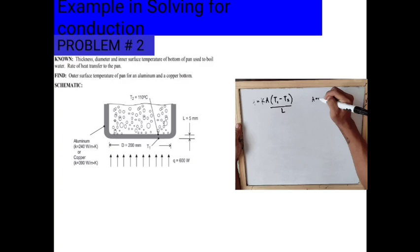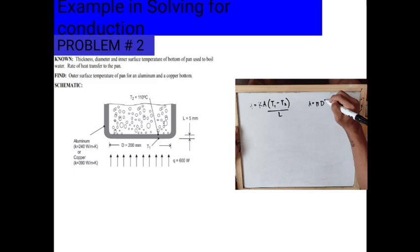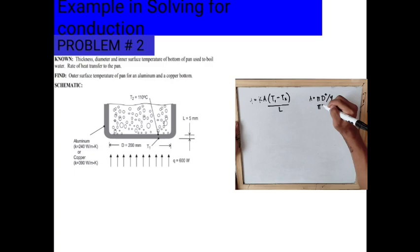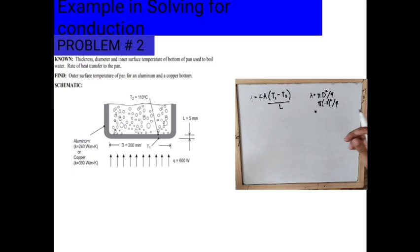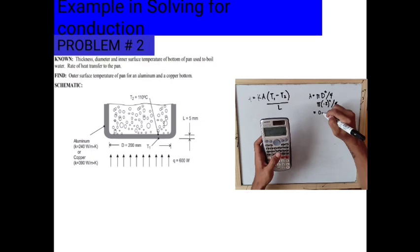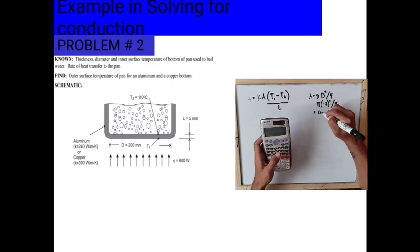In finding temperature 1 for aluminum and copper, we'll first find the area. Area is equivalent to π × diameter squared over 4. Pi times the diameter, which is given as 0.2, squared, divided by 4, is equivalent to 0.0314 meter squared.